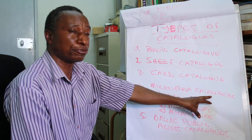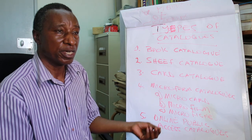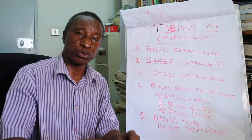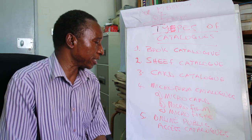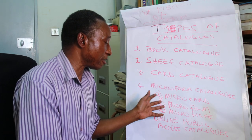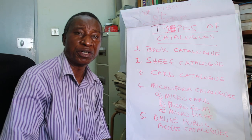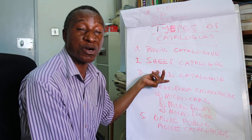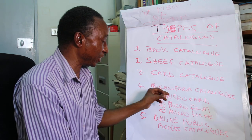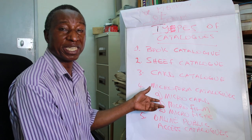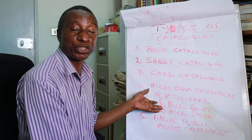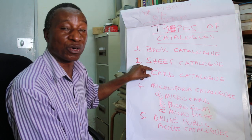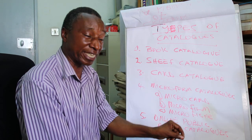The next type of catalogs are microform catalogs, which came in different varieties: microcard, microfiche, and microfilm. These were kept on small strips of film, and the good thing about them was that they were compact — you could have thousands of entries on a very small film strip. The card catalog was bulky and occupied large space, whereas microform catalogs were compact. The disadvantage was that you needed equipment, electricity, and they could only be consulted by one reader at a time, whereas a card catalog could be consulted by many readers.